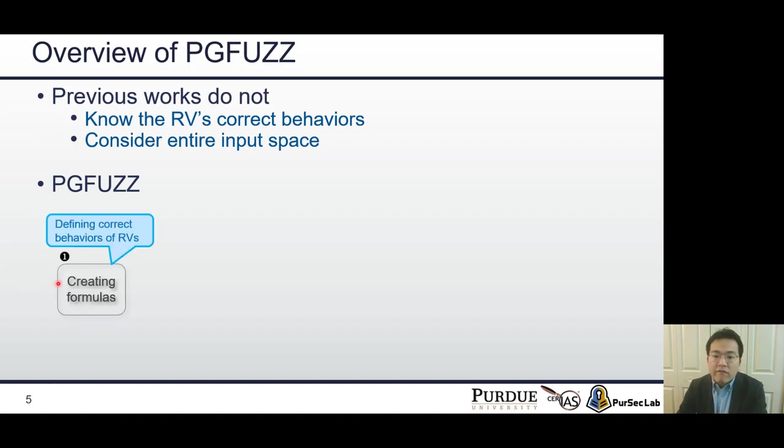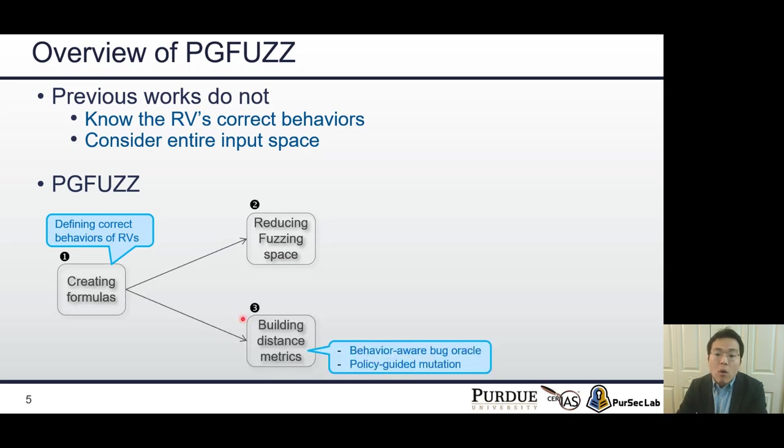First, we define RVs correct behaviors as formulas. Second, we narrow huge fuzzing space via static and dynamic analysis. Third, we build our own distance metrics to efficiently mutate the inputs. Lastly, we mutate inputs to trigger bugs by using reduced input space and guidance from distance metrics. From now on, I am going to explain each component of PGFUZZ step by step.